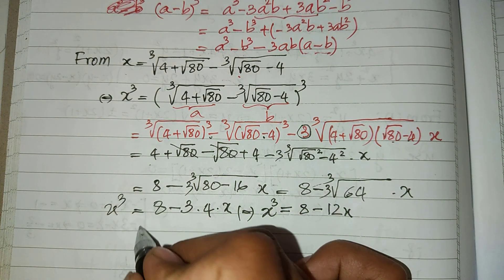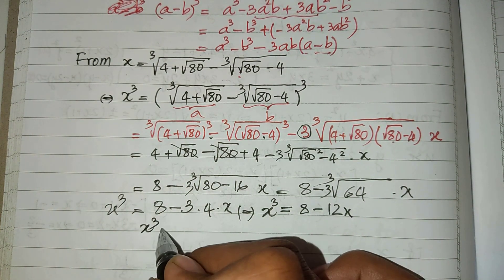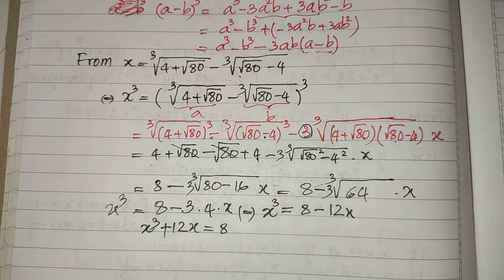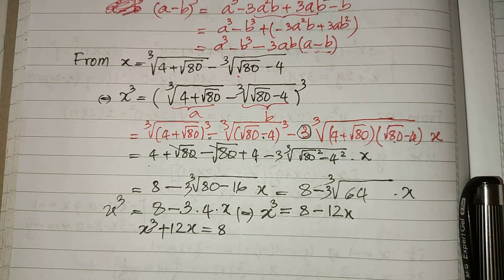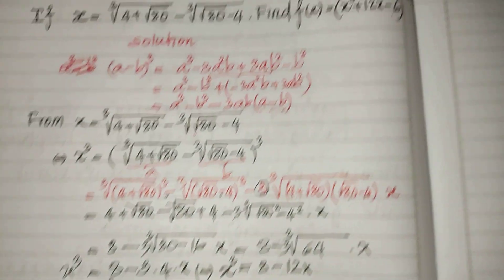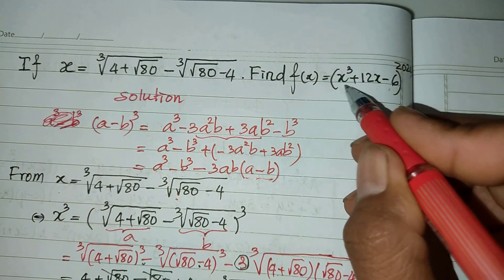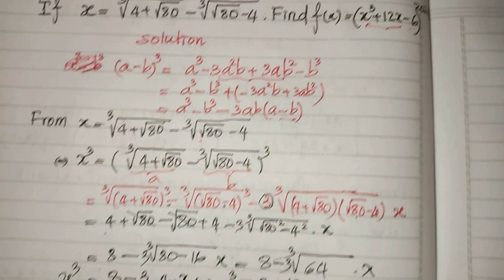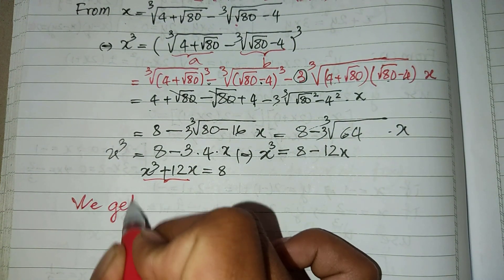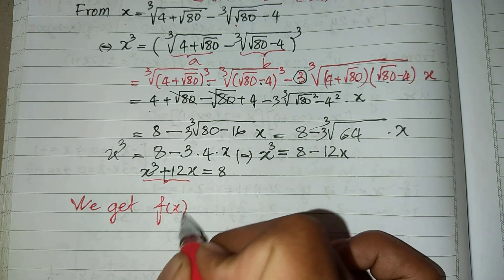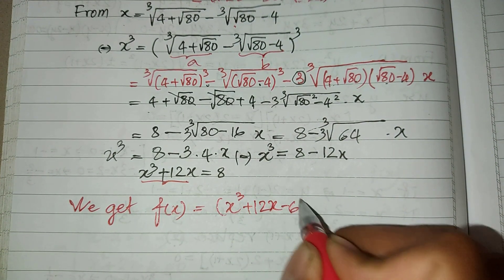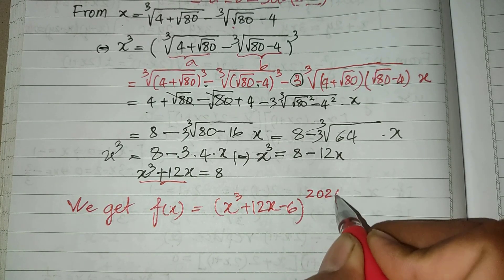Now I move 12A from the right-hand side to the left-hand side. So this is equal to 8, giving us 7x minus 12A equals 8x minus 6, all power 2, and 24.